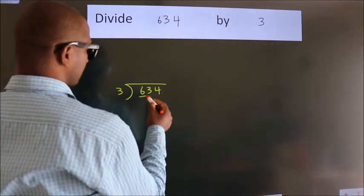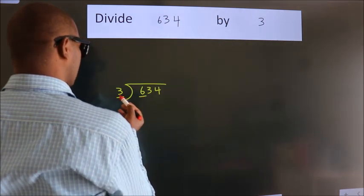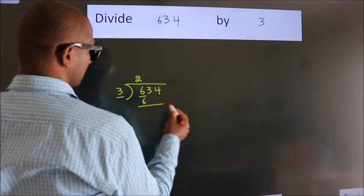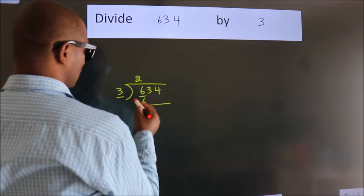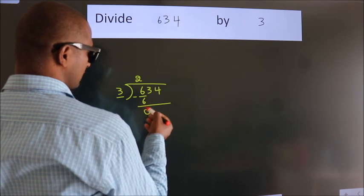Next, here we have 6, here 3. When do we get 6? In 3 table, 3 times 2 is 6. Now we should subtract, we get 0.